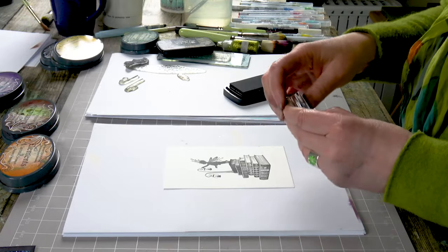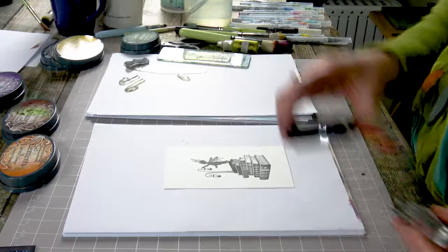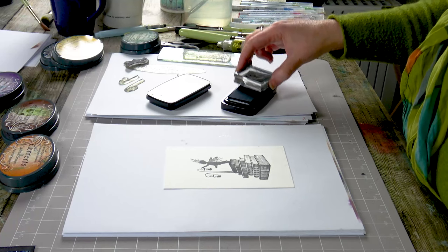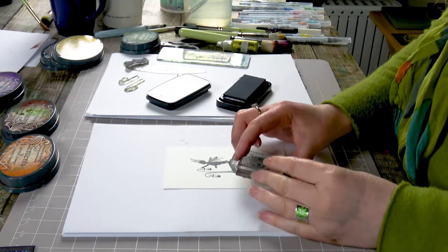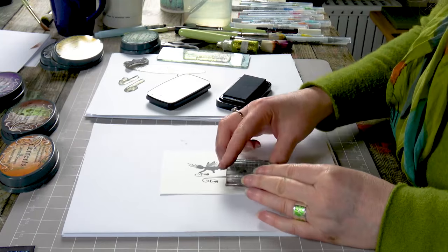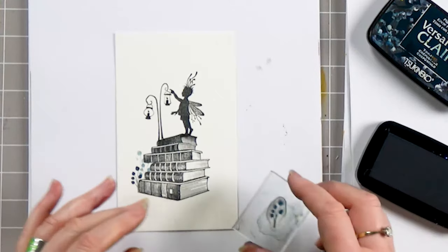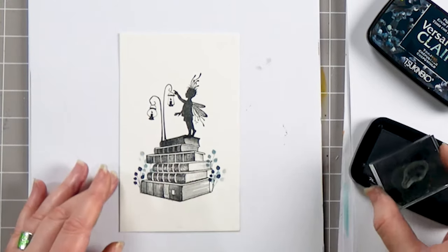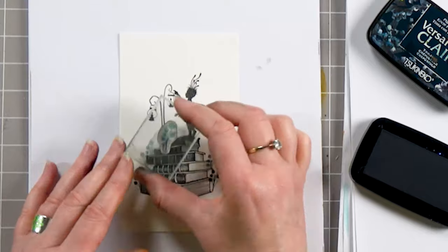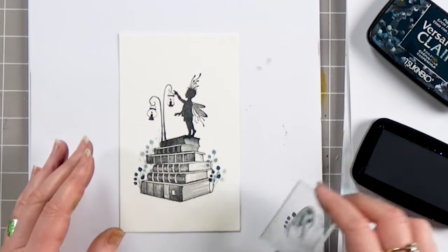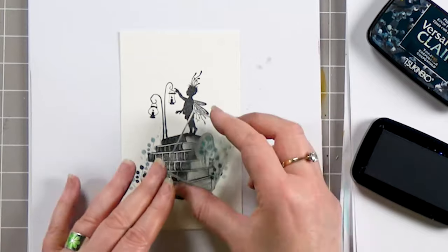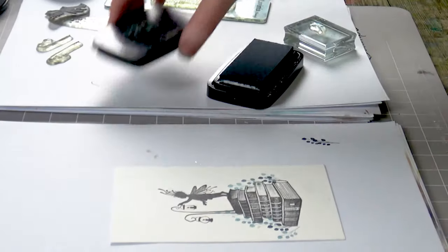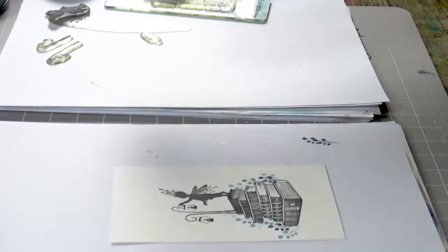And then I've got a little foliage stamp and this time I'm going to ink up in the twilight. These little tiny stamps are absolutely great for just adding a little bit of something. I just think a little bit of foliage just brings it to life. We can add more if we want but let's just start with some color now.